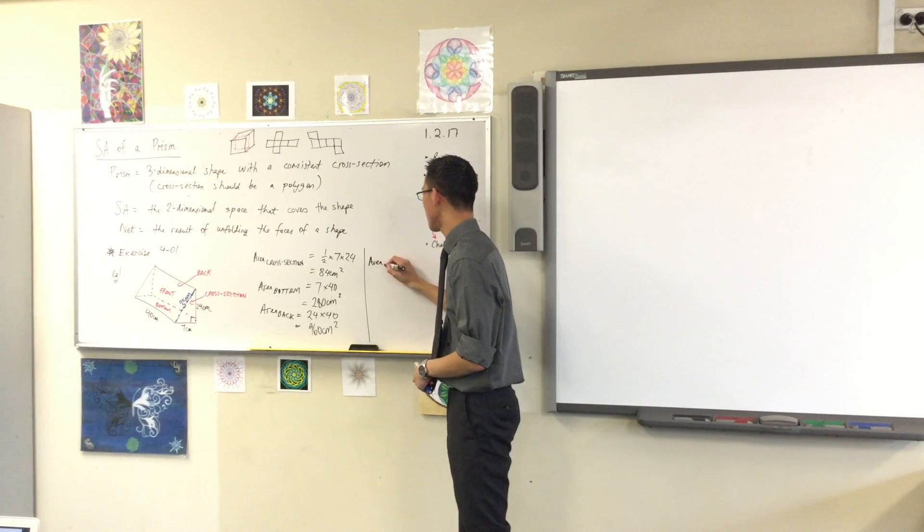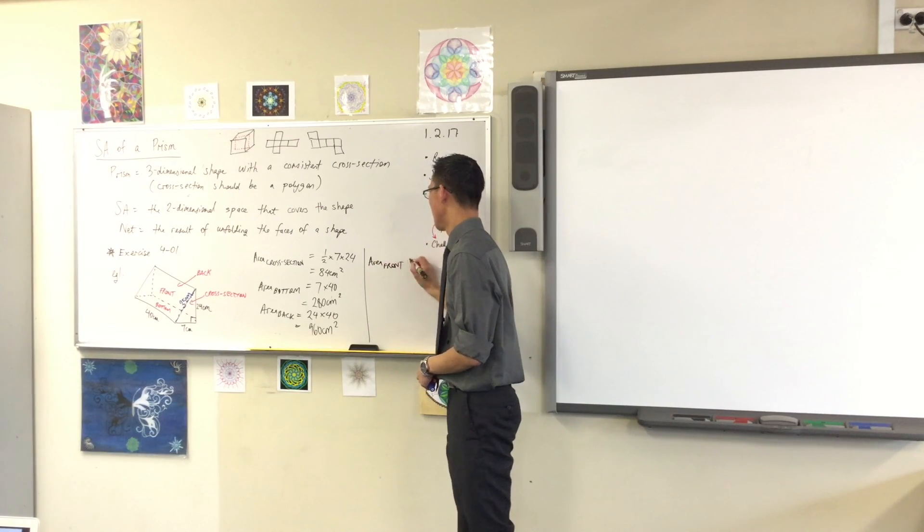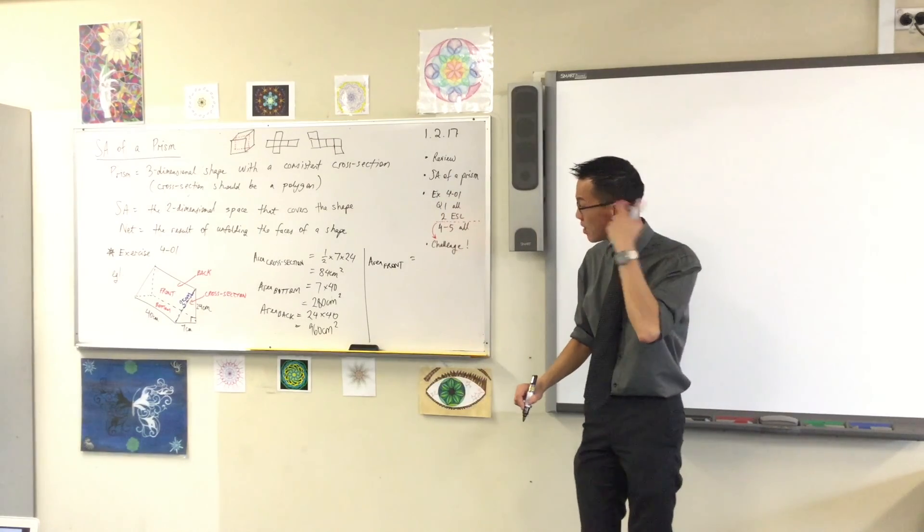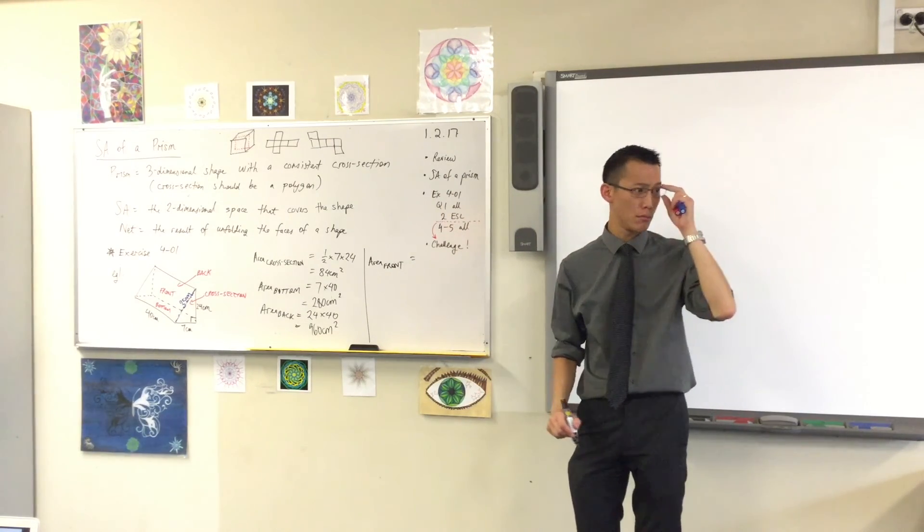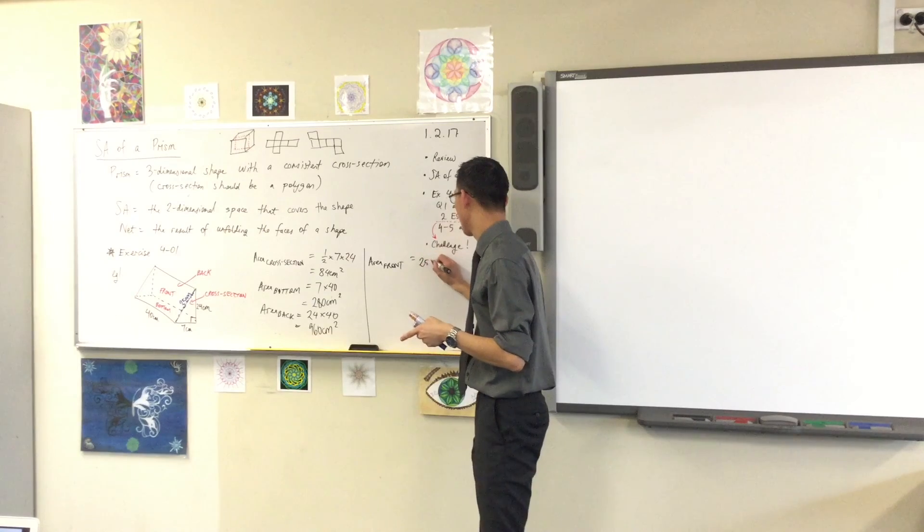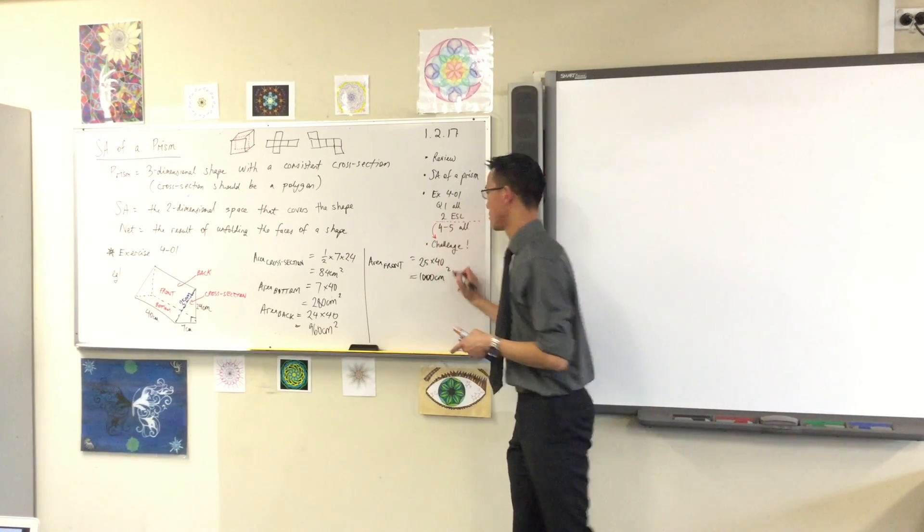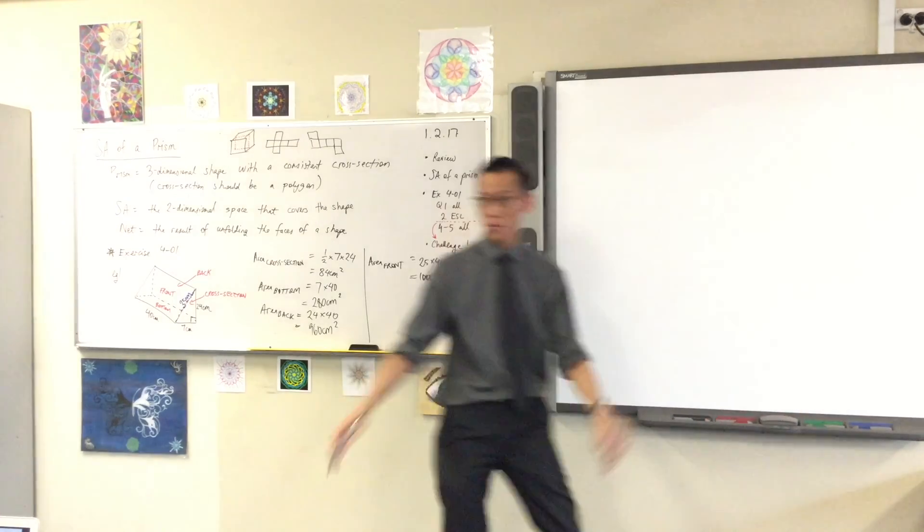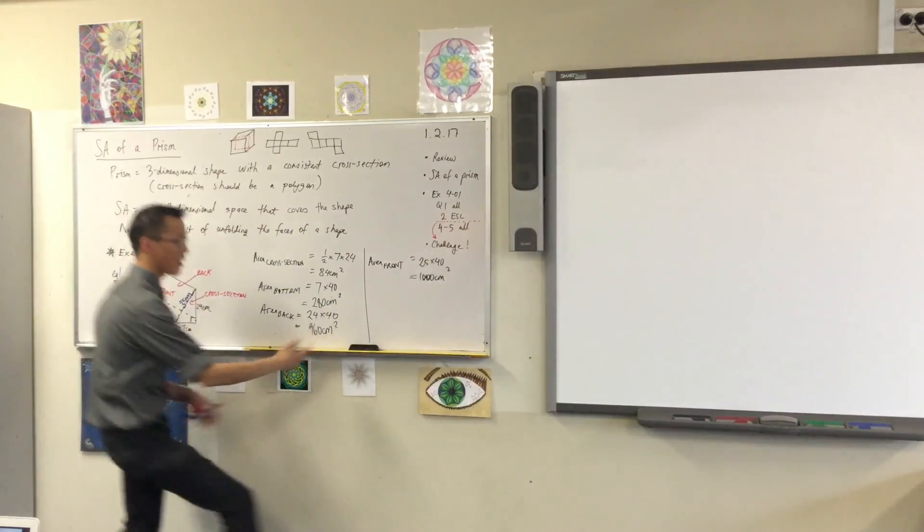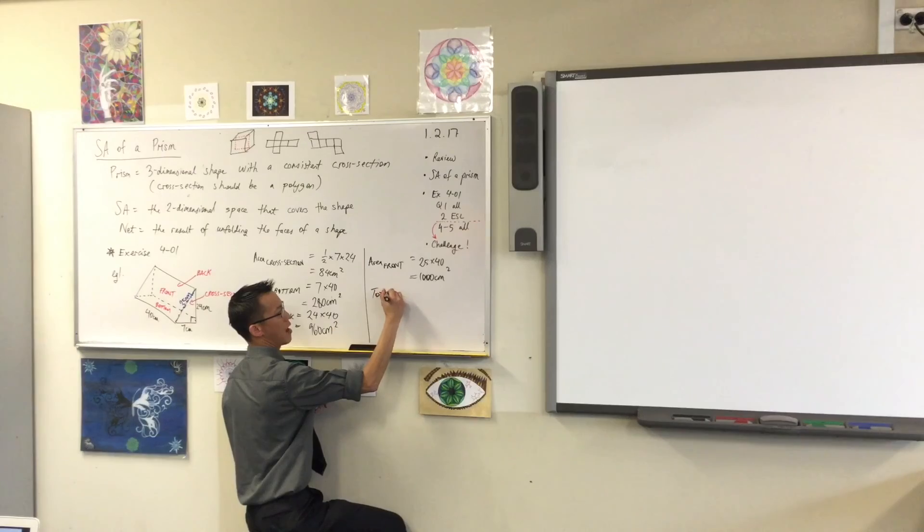I've run out of space over here but you should keep going down the page. The area of the front therefore is going to be 25 times 40. 1,000. And that's exactly 1,000. Fantastic. Got all my pieces. I'm ready to bring it all together. The total area.